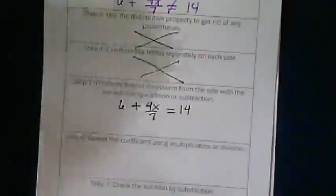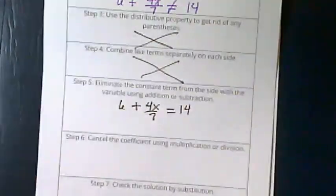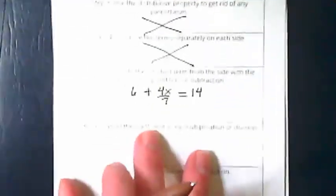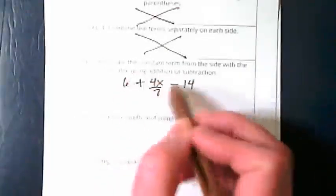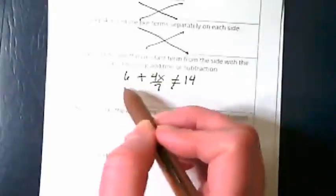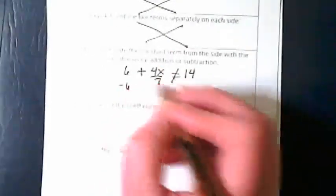And although this looks a little bit complex because we've got a division problem in it, we're just going to go step by step. And I hope you see by the end it is not that complex. This step says to eliminate the constant term from the side with the variable. This is the side with the variable. And our constant term is the 6. So we're going to zero that out by subtracting it.